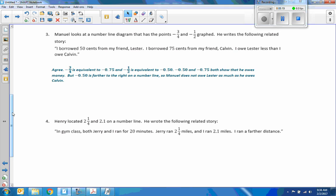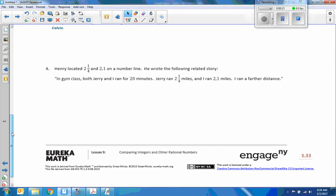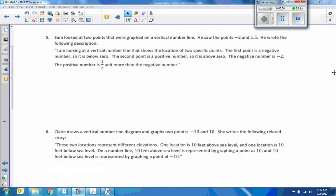Number four. Henry located two and a quarter and 2.1 on the number line. He wrote the following related story. In gym class, both Jerry and I ran for twenty minutes. Jerry ran two and a quarter miles, and I ran 2.1 miles. I ran a farther distance. Is that true or no? Hopefully you disagreed with that statement. Two and one-fourth is greater than 2.1, since two and a quarter equals 2.25 on the number line. The point associated with 2.25 is to the right of 2.1. So Jerry ran a further distance.